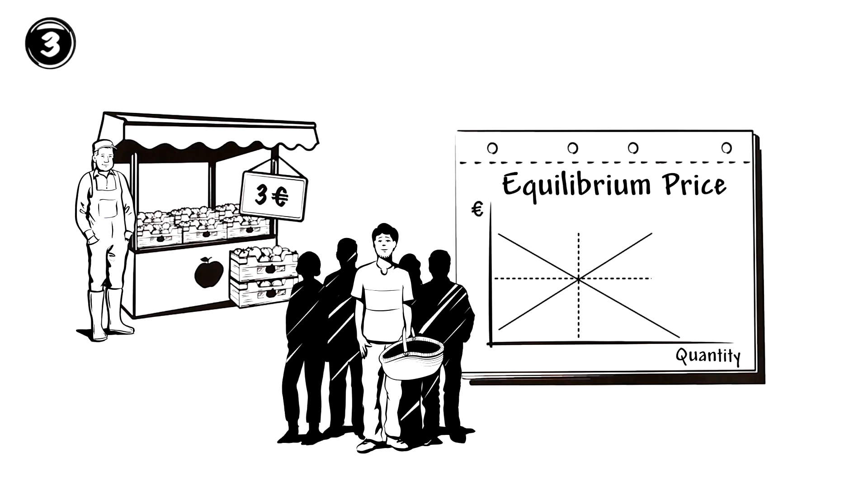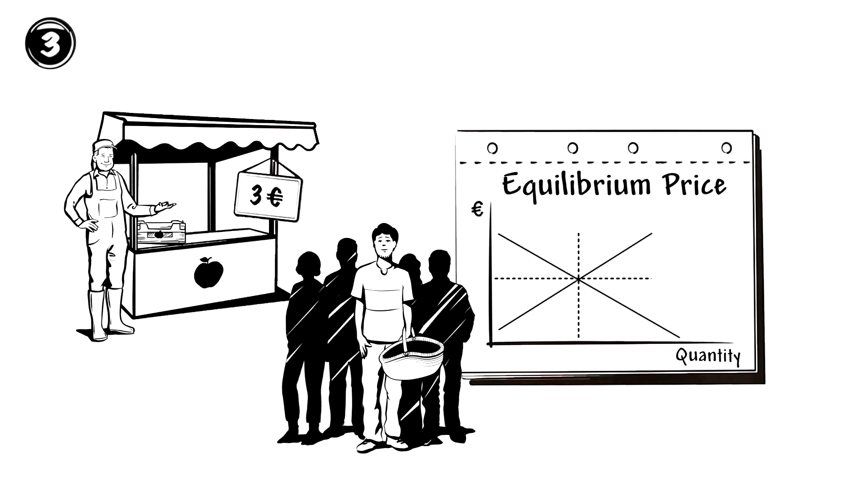This means that Farmer Davies can earn enough selling his apples without driving away his customers by setting prices that are too high. Farmer Davies sells his entire harvest and John and the other customers are happy.